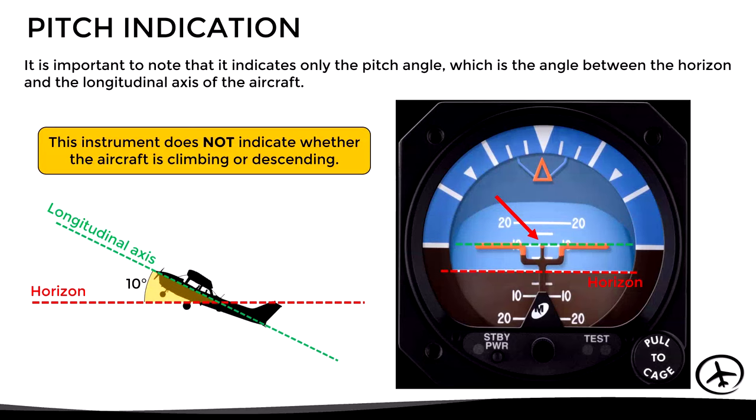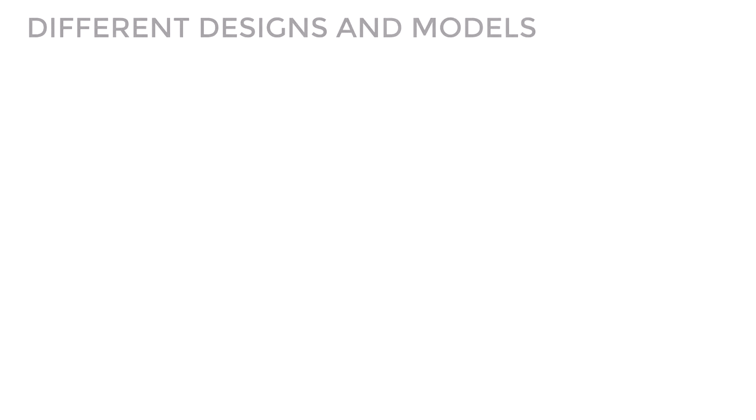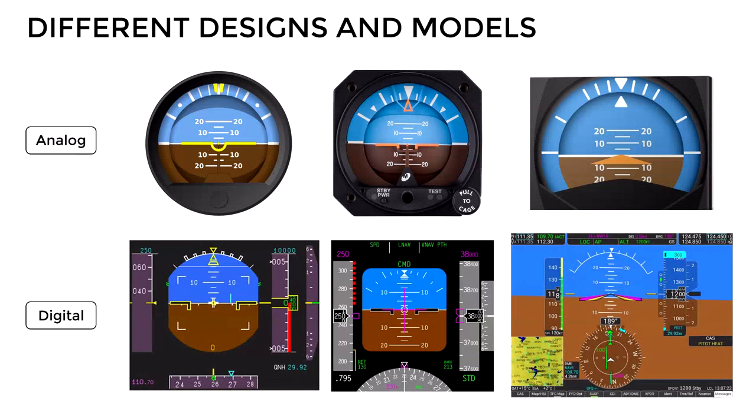Another important point: this instrument does not indicate whether the aircraft is climbing or descending, since it only indicates the attitude of the aircraft in relation to the horizon. The instrument used to determine if the aircraft is actually climbing or descending is the vertical speed indicator.